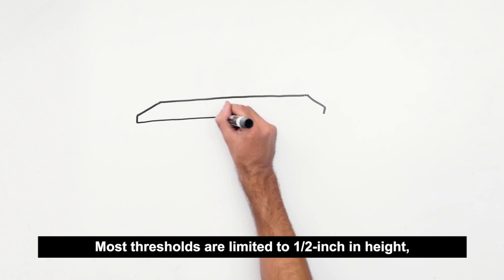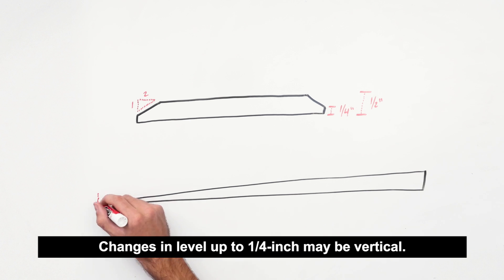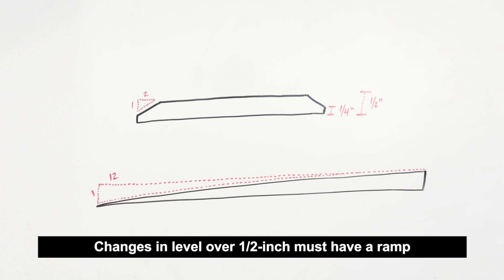Most thresholds are limited to one half inch in height, with a slope not steeper than one to two. Changes in level up to one quarter inch may be vertical. Changes in level over one half inch must have a ramp with a slope not steeper than one to twelve.